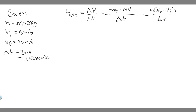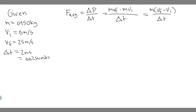So 0.002 seconds is the impact time. Now we've got all our variables: m, v-final, v-initial, and the change in time, so we can just solve.